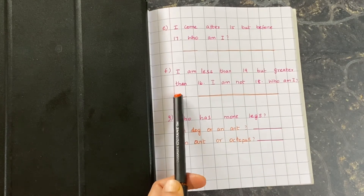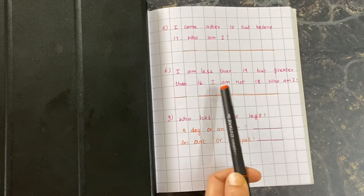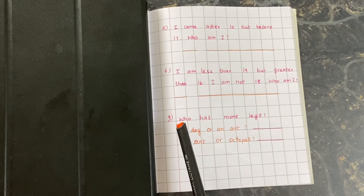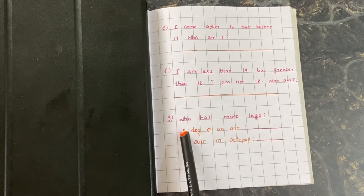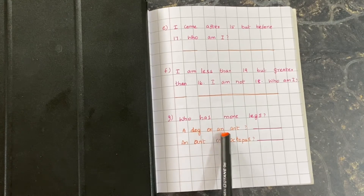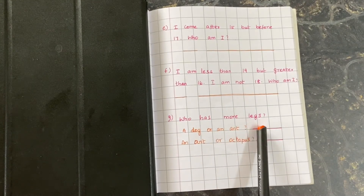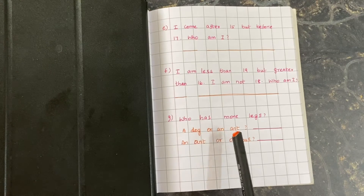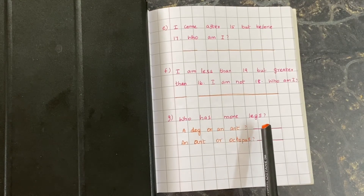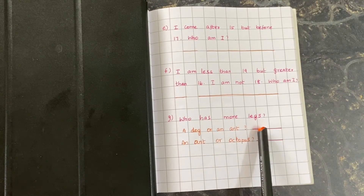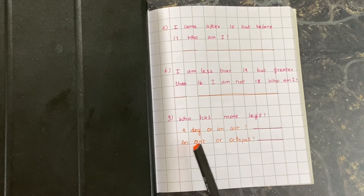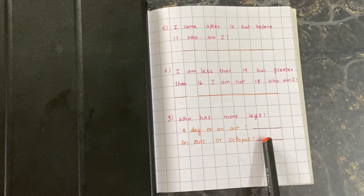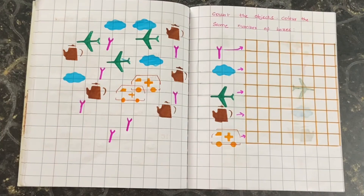Who has more legs — a dog or an ant? A dog has four legs and an ant has six legs, so an ant has more legs. What about an ant or an octopus? An octopus has eight legs, so an octopus has more legs.